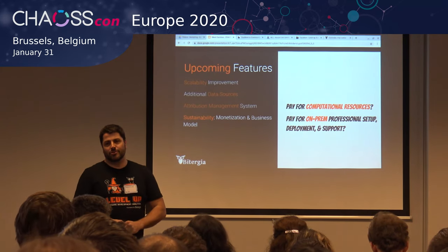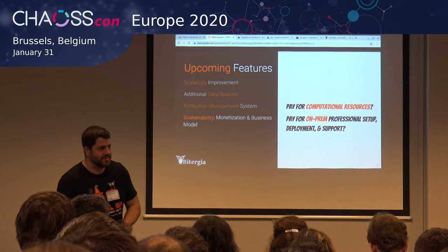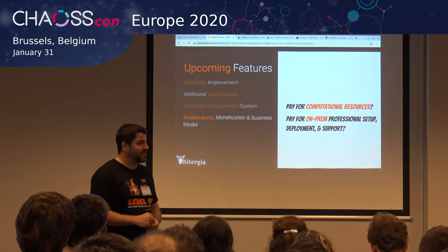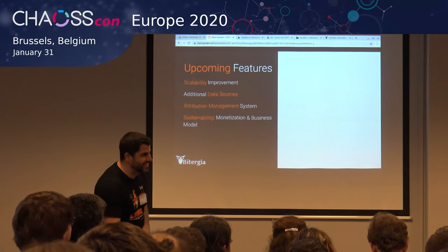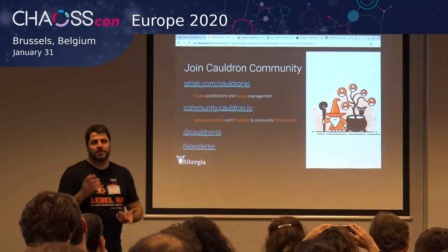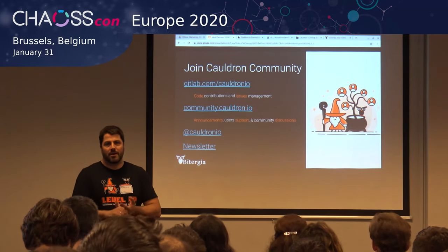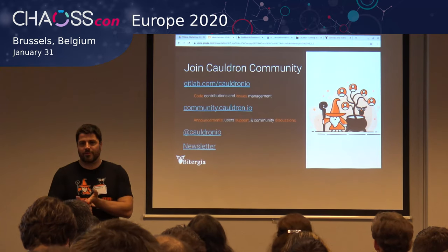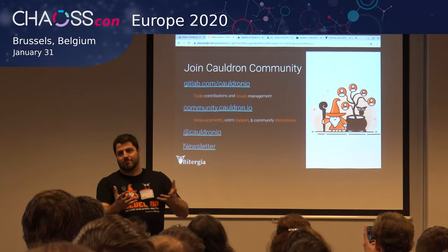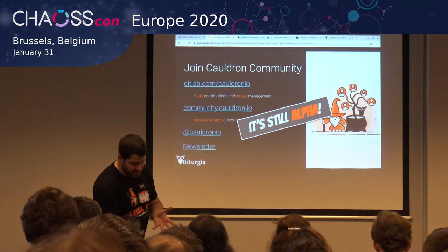We started working on this in June, and after summer, people from Red Hat said they want this in their company. They are our early adopter — thank you Brian for joining on this. So please join our community. There's a GitLab repository with all the code. There's a Discourse forum to ask questions and get support. There's Cauldron.io. There's live tweeting about what's going on with Cauldron. And of course, we have a newsletter. Please join. And remember — it's still alpha.